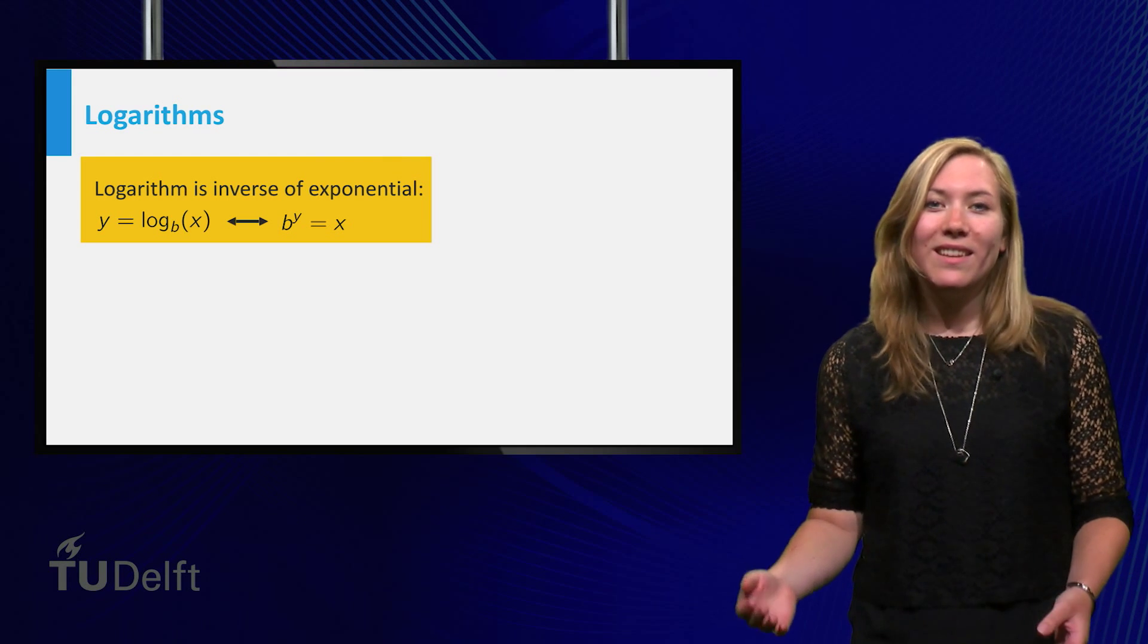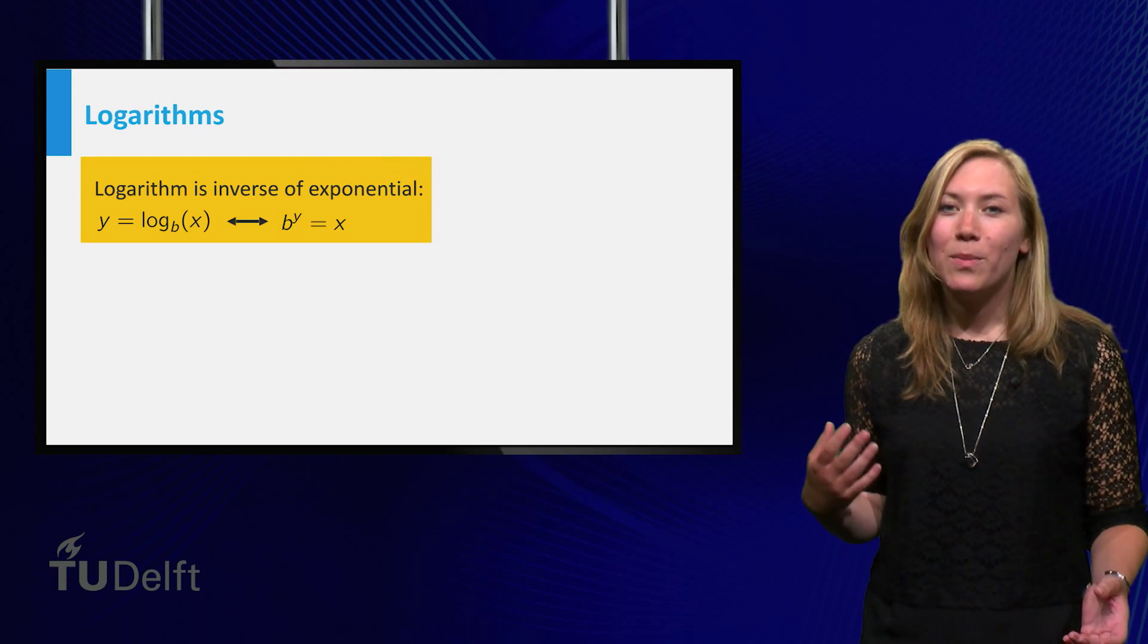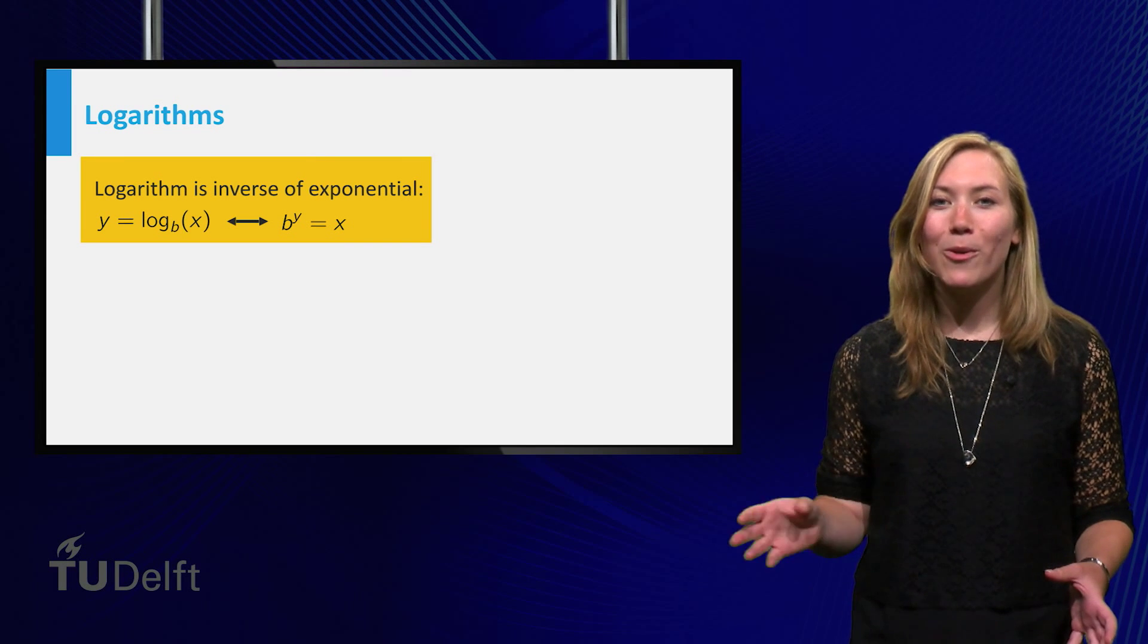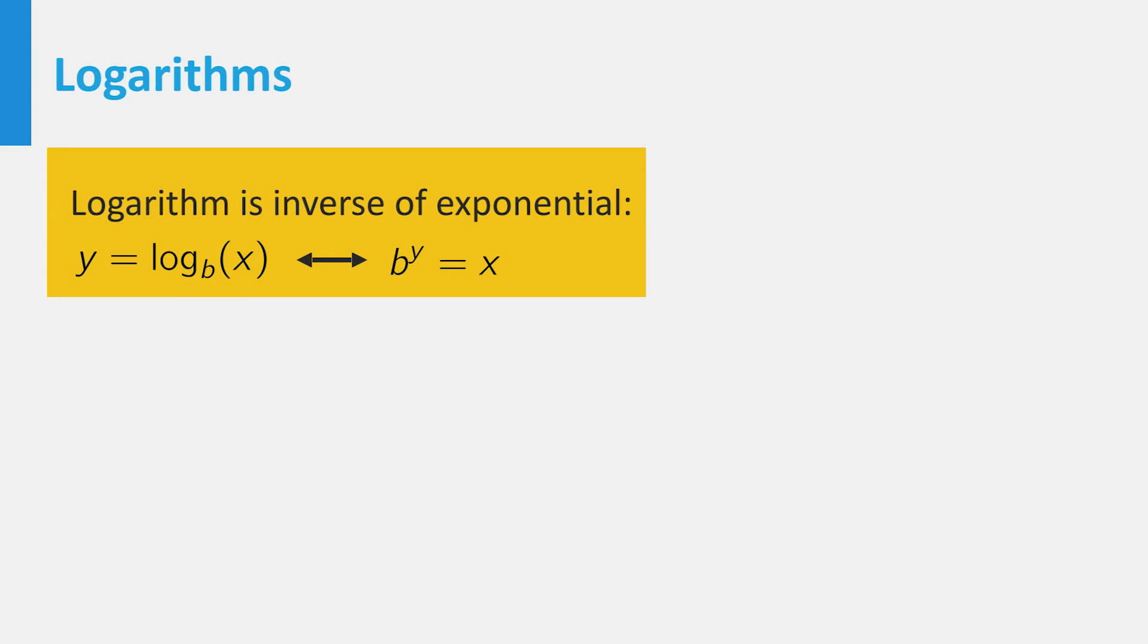The logarithm base b is the inverse function of the exponential function b to the power x. If b is unequal to 1, the exponential functions satisfy the horizontal line test, so the inverse exists.